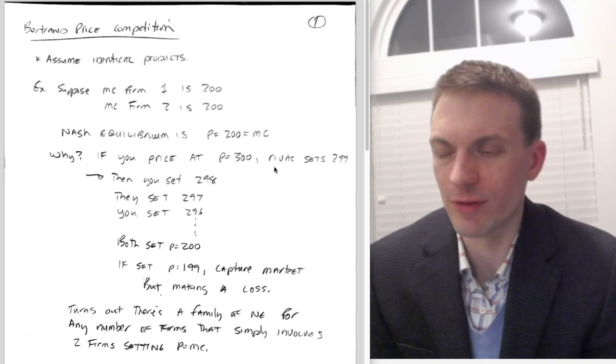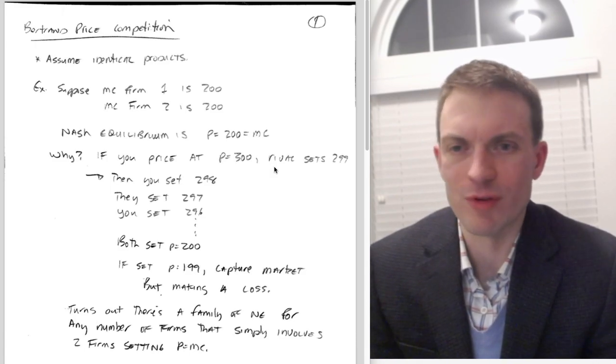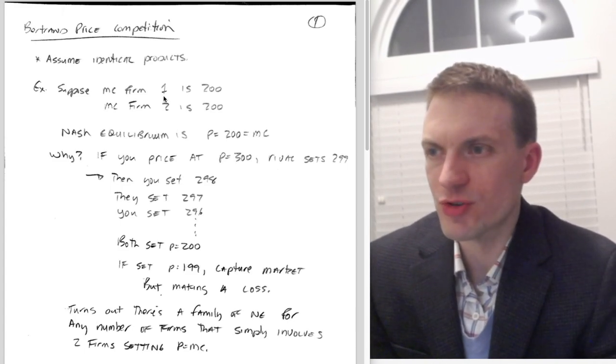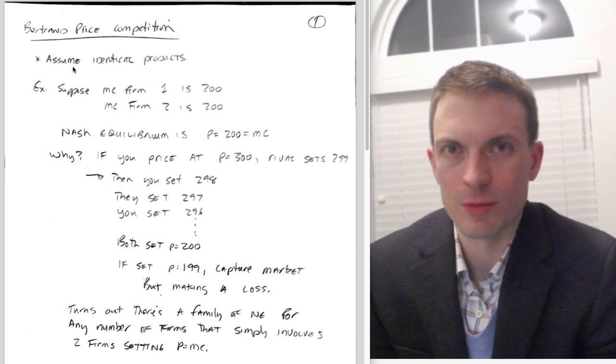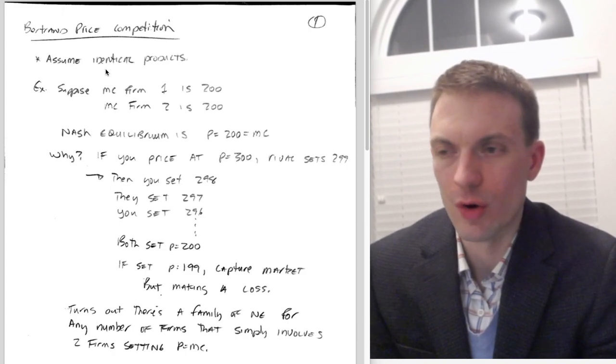Like a Hoteling model, linear city, or stuff like that. In a lot of cases, when people are introduced to Bertrand equilibria or the Bertrand model, this is the version that they would see and this would be the type of equilibria they'd be solving for. I've got my assumption here for Bertrand price competition: we're assuming identical products. That's very key.